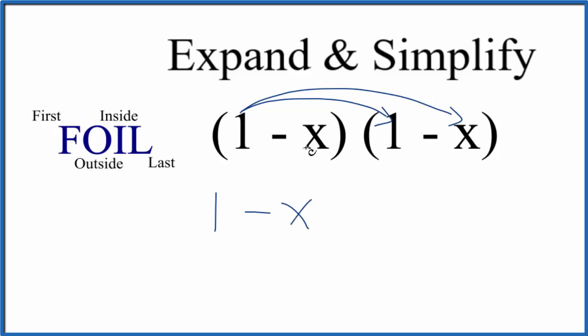For the inside terms, we have negative x here times 1, that's negative x. And then for that last term, we have the negative x times negative x. Negative times negative is positive. Since it's x times x, we'll have positive x squared.